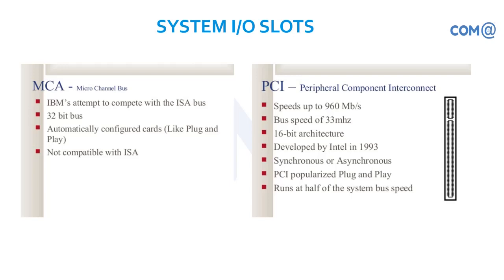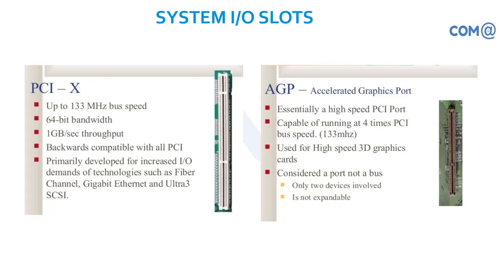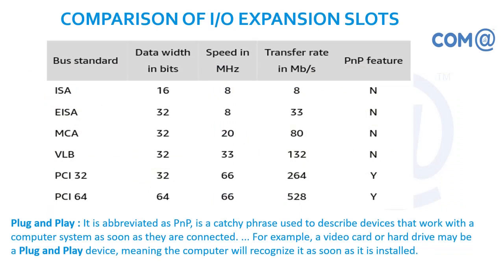PCI is a very familiar slot that started appearing from the Pentium series of motherboards. It began as 16-bit and later supported 32-bit and 64-bit. PCI-X provided higher speed of 133 MHz and 64-bit bandwidth with a throughput of one gigabit, enabling faster communication. AGP is specifically designed for the graphical port — you can only insert a display card here, not a sound card or network card.